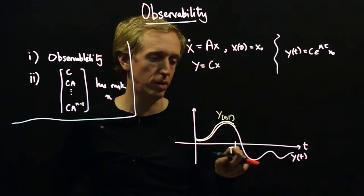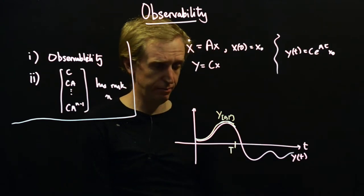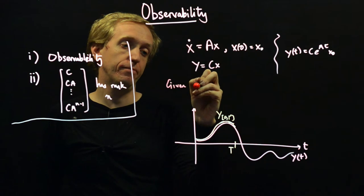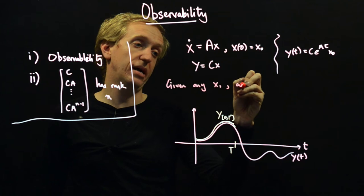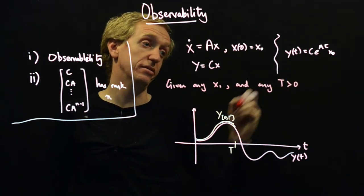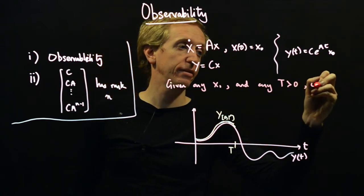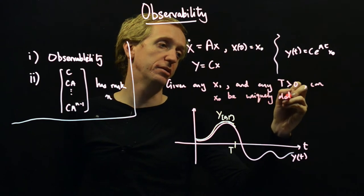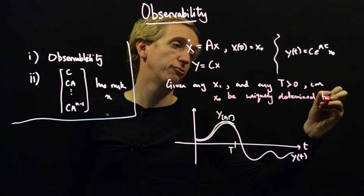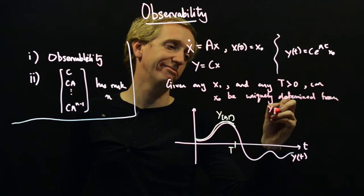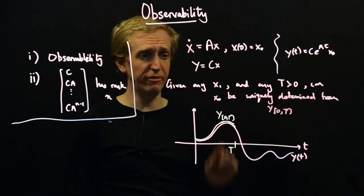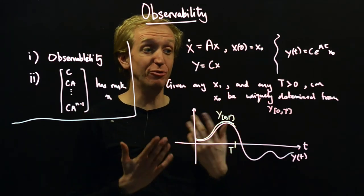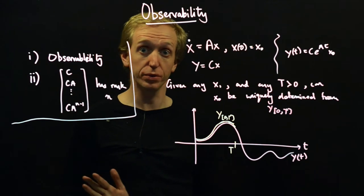It's just the part of the output signal y on the interval 0t. And observability asks: given any x0 and any t greater than 0, can x0 be uniquely determined from y 0t? So given any initial condition and any length of snapshot of our output trajectory, are we able to uniquely determine what the initial condition was that caused this?